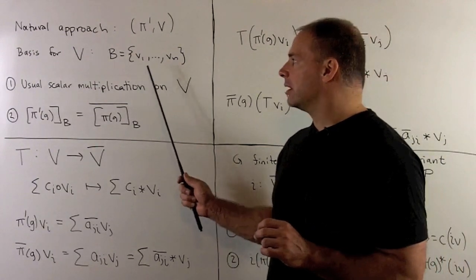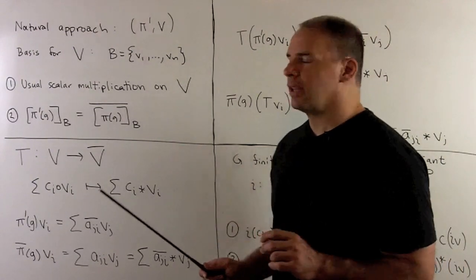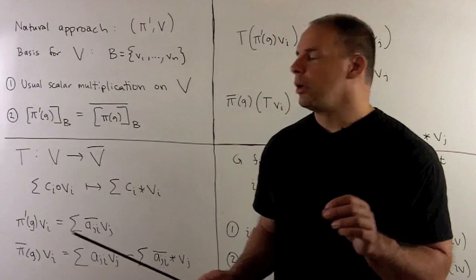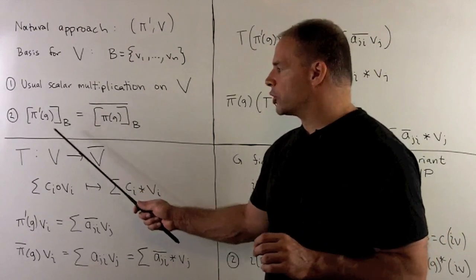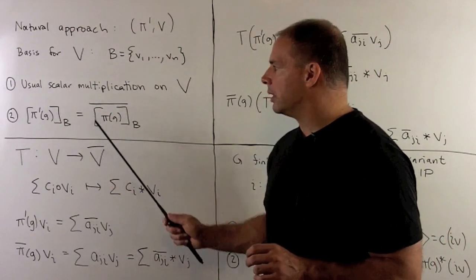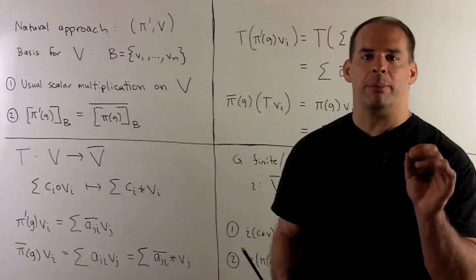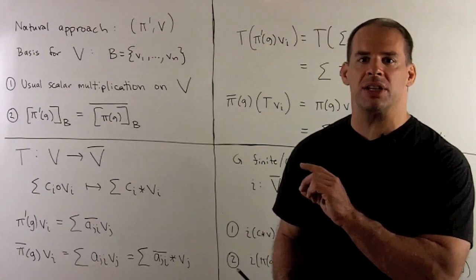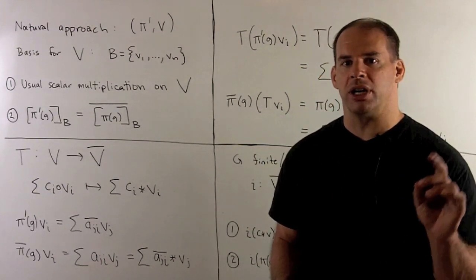Now, if I choose a basis, V1 through VN. Then, pi prime of G, with respect to this basis, it's just going to be the matrix given by pi of G, with respect to this basis. But, we take the complex conjugate of each entry.